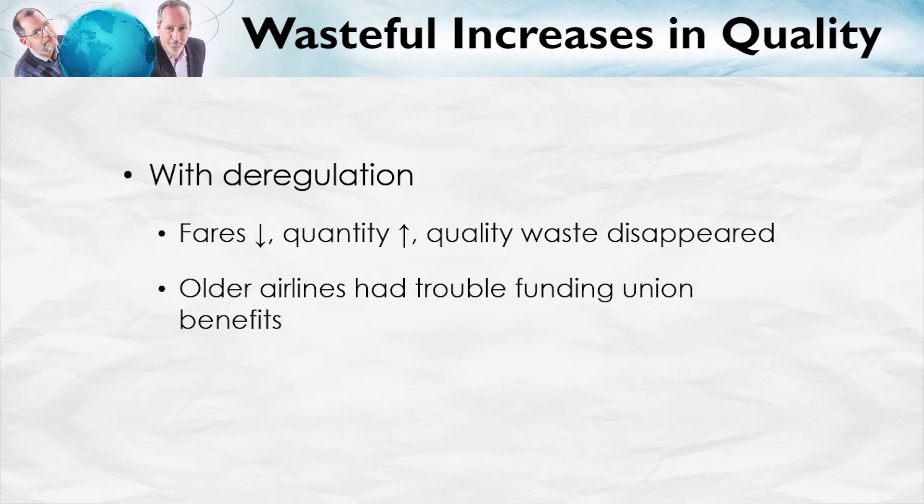That's another way of seeing that there was quality waste. The fact that after deregulation, fares went down and quality went down indicates that the quality really wasn't worth what the people had been paying for it. This also was the genesis of a lot of problems in the airline industry, since the older airlines had trouble funding union benefits — they'd promised all of their employees these big benefits when those profits were high because of regulation, and they had trouble supplying those benefits once regulation ended.